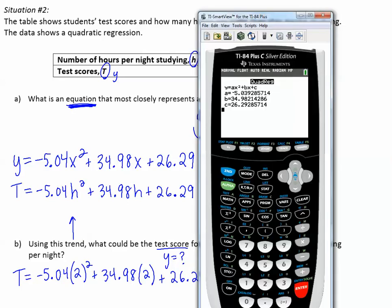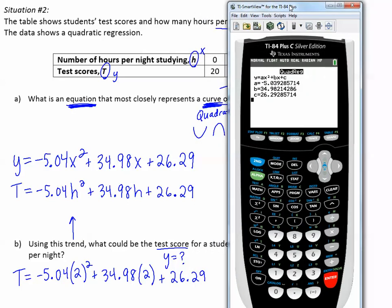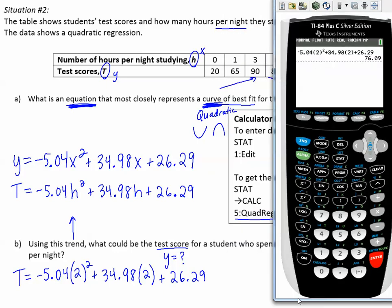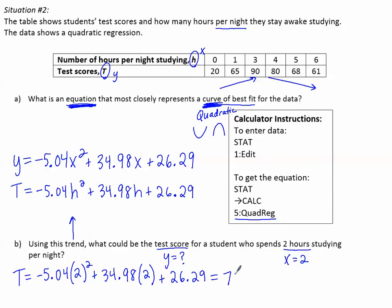Now let's go type that in and see what value we get. Here we've plugged it in, it says 76.09. So approximately the test score would be a 76.